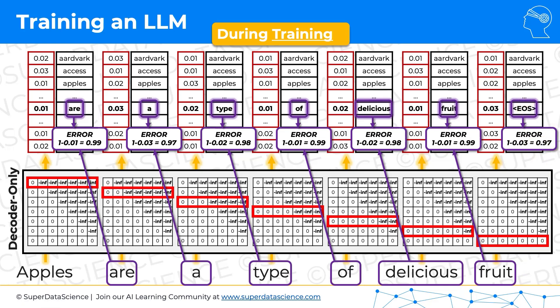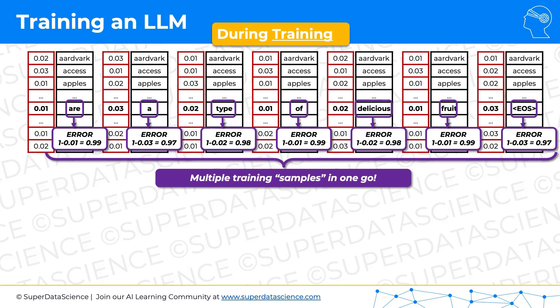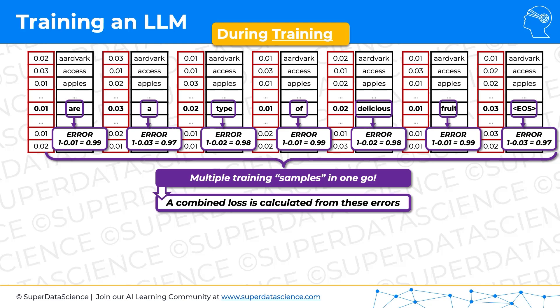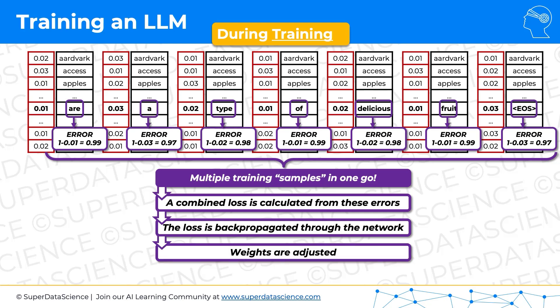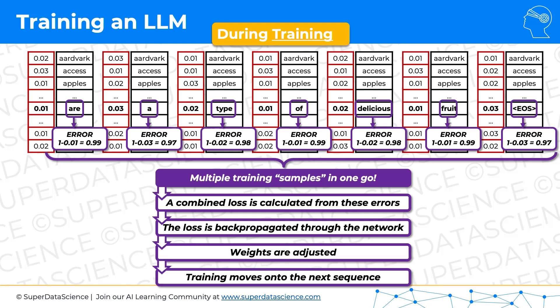As a result, we get seven samples — seven errors — from one sentence with seven words in one go. The transformer saw seven training samples and was able to calculate the error for each. Then we calculate a combined loss from these errors and backpropagate that loss through the network. Please check a separate tutorial on backpropagation — we have some good ones on SuperDataScience. Basically, this combined loss is backpropagated through the network, weights are adjusted, and the training moves on to the next sequence.